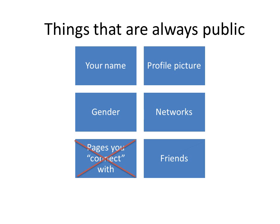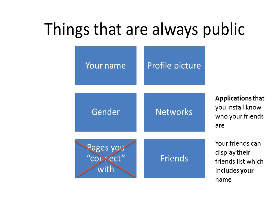Facebook has decided that there are certain things that are always public, but not as much as used to be the case. Your name does have to be public. Your profile picture has to be public too, but you don't have to have a profile picture if you don't want one. You do have to disclose your gender and any networks you belong to, but you don't have to belong to any networks. You no longer have to disclose the pages that you like. Friends is kind of a special case — you can choose not to display your Friends list on your page, but being a friend is a two-way street. Your friends have a choice as to whether to display their friends on their page, and your Friends list can also be made available to applications that you put on your page. So if you really don't want anybody to know that someone's your friend, don't friend them.